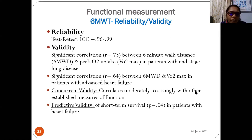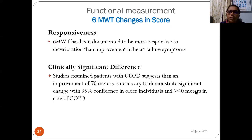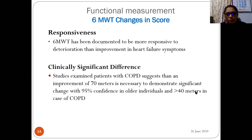Responsiveness: the 6MWT has been documented as more responsive to deterioration than improvement in heart failure symptoms. For clinically significant difference, studies in COPD suggest an improvement of 70 meters is necessary to demonstrate significant change with 95% confidence in older adults, and more than 40 meters in COPD patients.